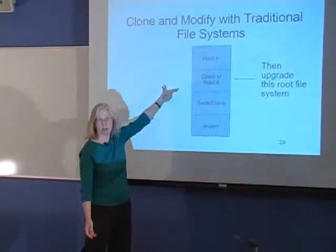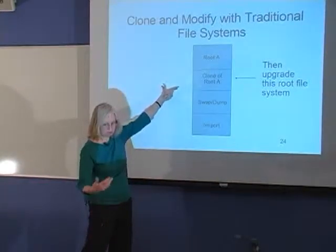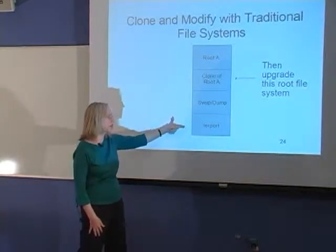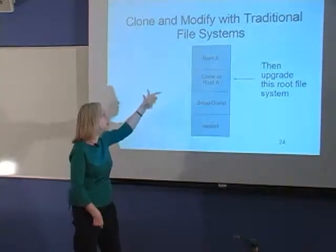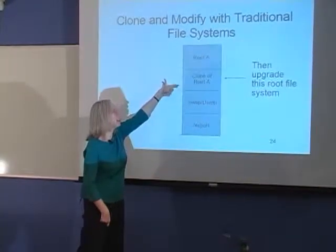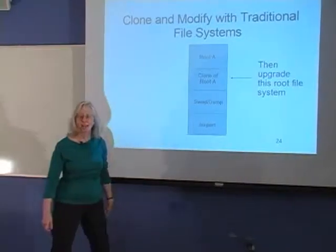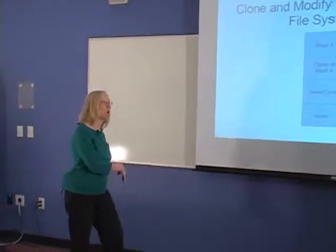With UFS, because you had to pre-partition your system into slices, you would have a slice dedicated to root and another empty slice for this process, plus your swap and dump slice and data slices. What you would typically do is clone root A into the empty slice, which took a while because you had to literally copy the whole thing. Then you would operate on the clone, boot it, and go back to the original if the clone doesn't work.